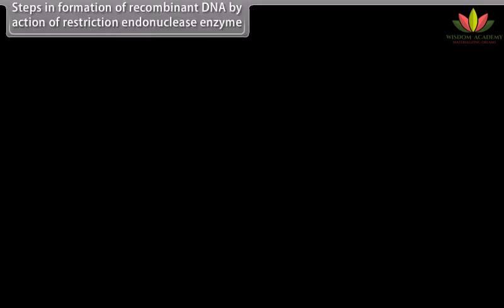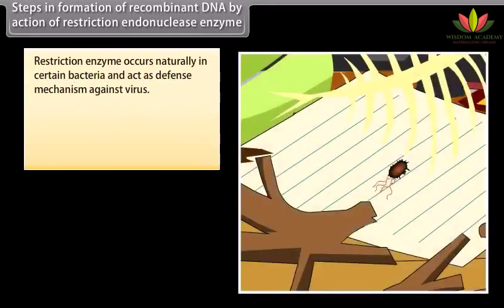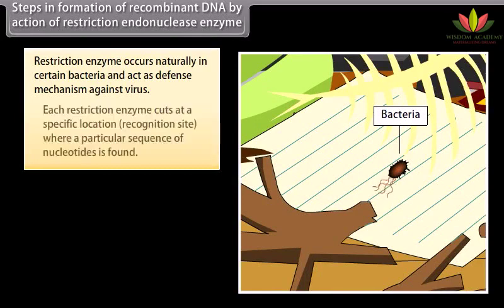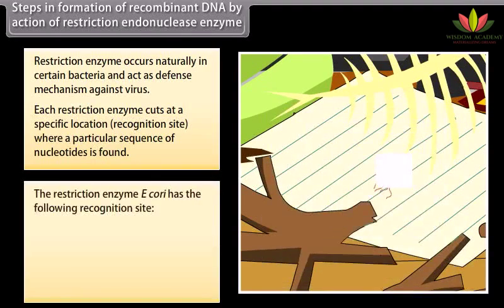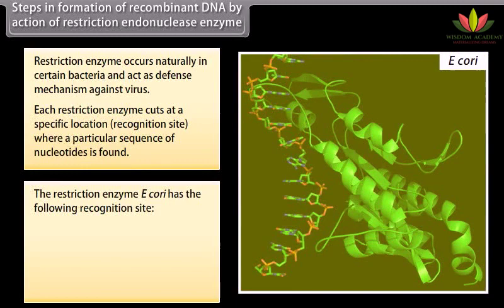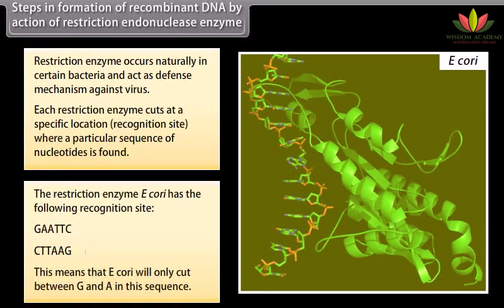Steps in formation of recombinant DNA by action of restriction endonuclease enzyme. Restriction enzymes occur naturally in certain bacteria and act as a defense mechanism against viruses. Each restriction enzyme cuts at a specific location called a recognition site, where a particular sequence of nucleotides is found. The restriction enzyme EcoRI has the following recognition site: G-A-A-T-T-C / C-T-T-A-A-G. This means that EcoRI will only cut between G and A in this sequence.